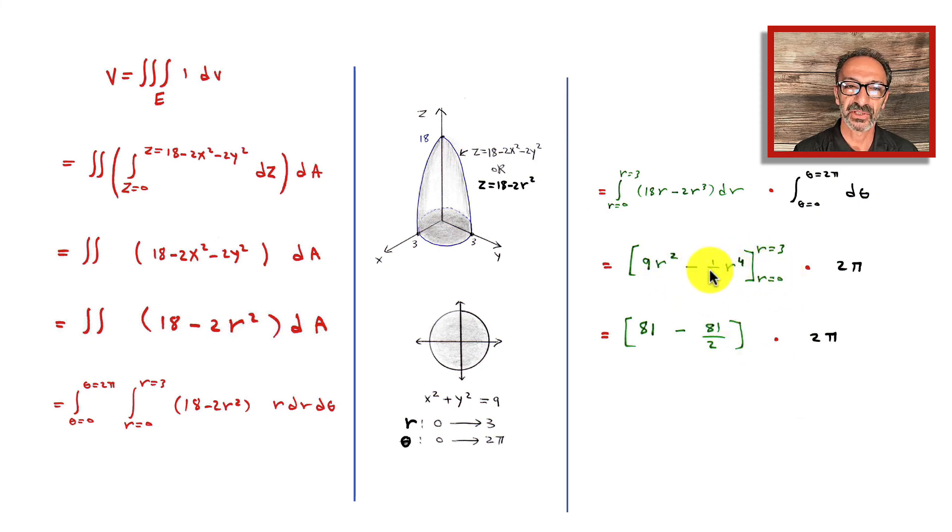Plug in 3, plug in 0 is not going to do anything. I have 81 minus half of 81, which is 81 over 2, times 2π. That 2 simplifies, and that's my final answer, 81π.